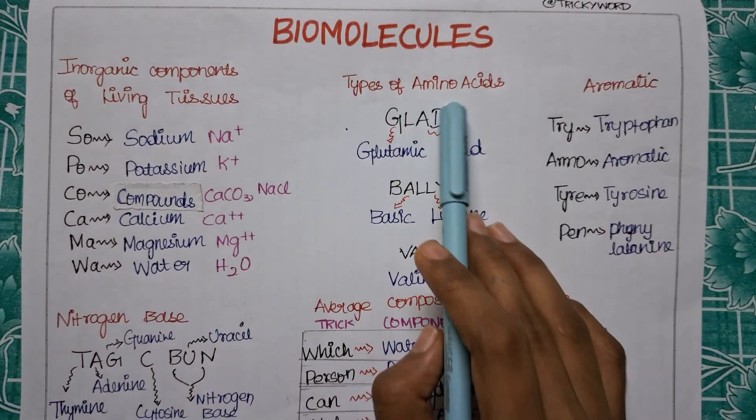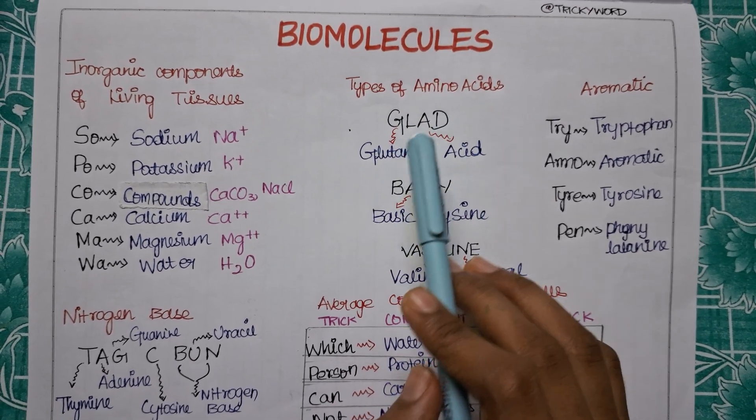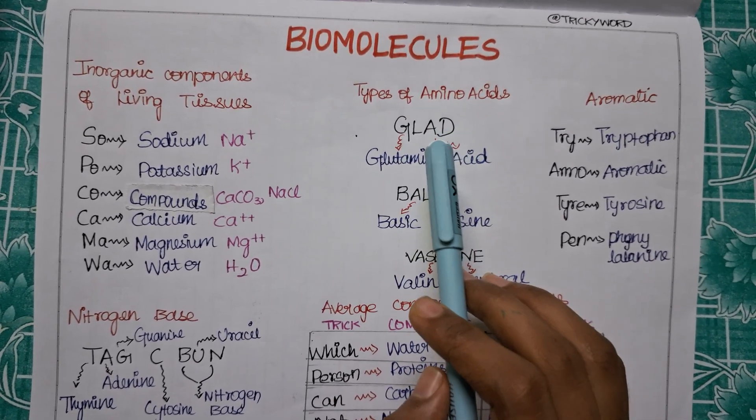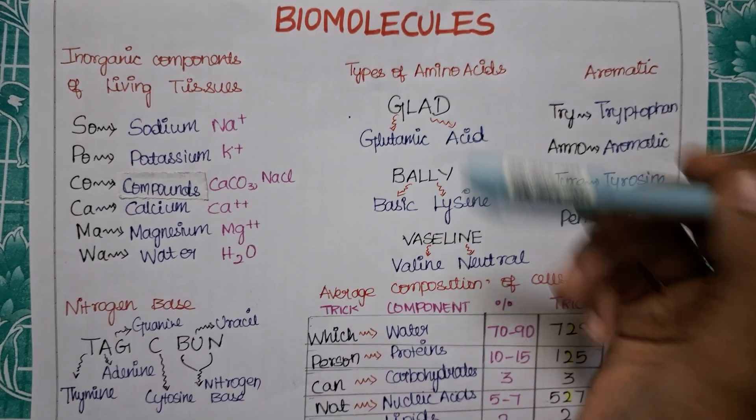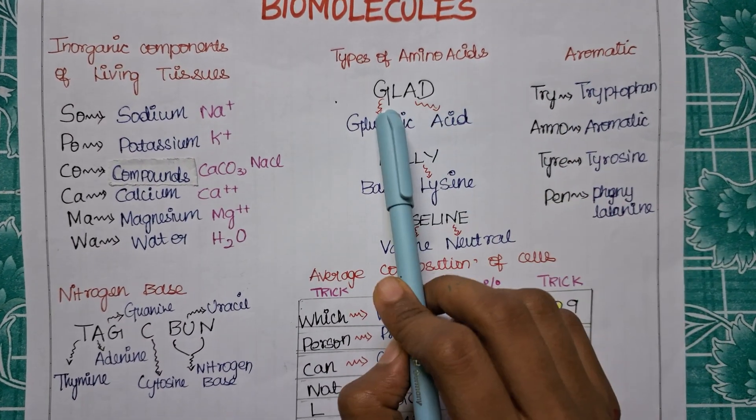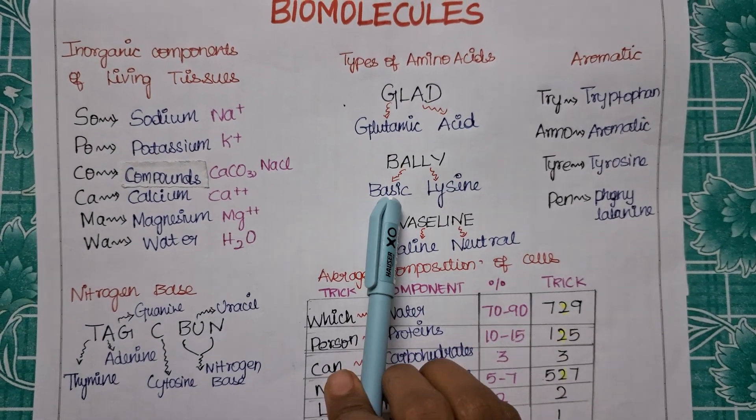Now we will move on to the next one, that is your types of amino acid. So these are the types of amino acids based on your numbers of your amino and carboxyl group present. So there are three types: the first trick will be that firstly I will tell the three types - one is acid, next is basic, next is neutral.